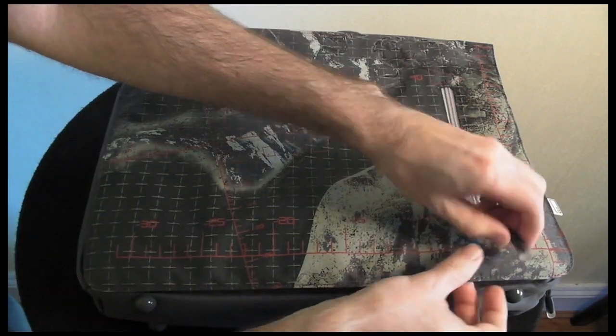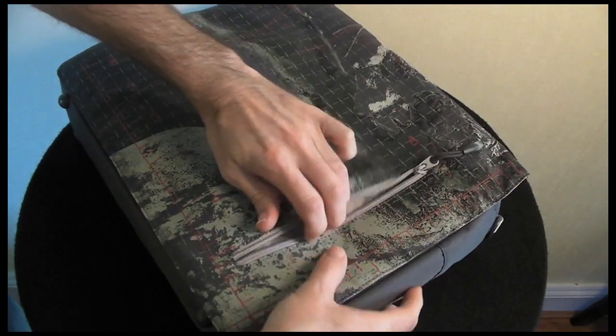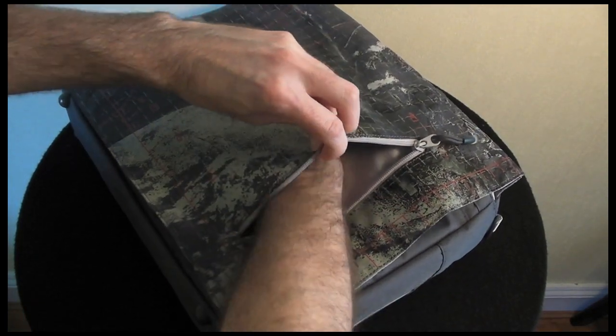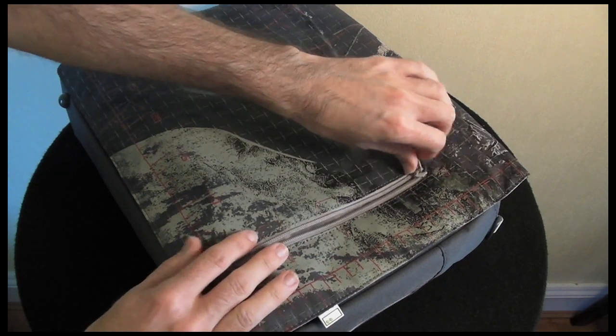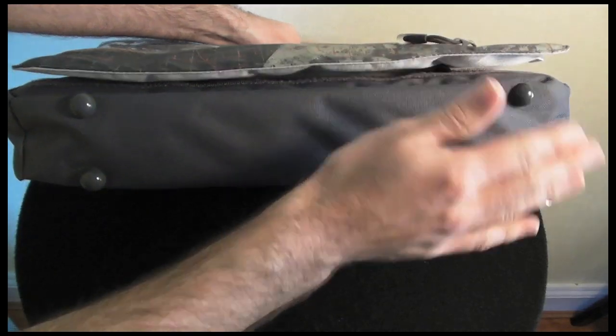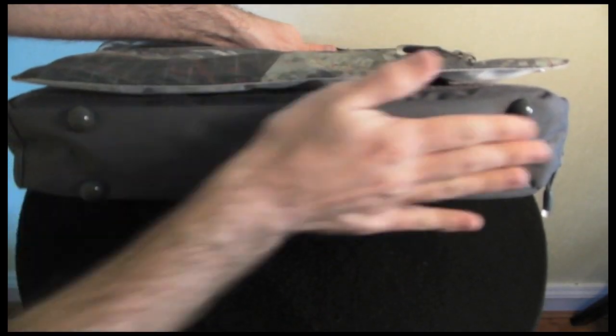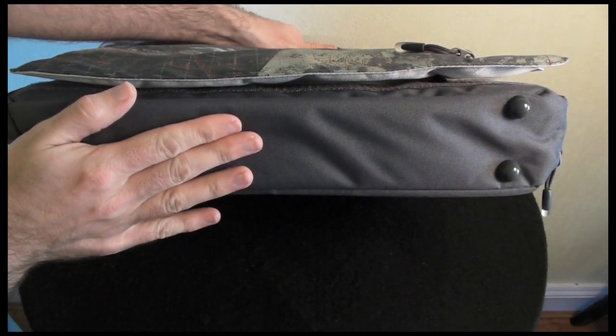On the front flap we've got this zipped pocket and this is just about big enough for fitting something like an A5 notebook. On the bottom of the bag, I'll just show you that very quickly, there are 4 plastic feet so the bottom of the bag is raised up a little bit if you're setting it down on the ground.